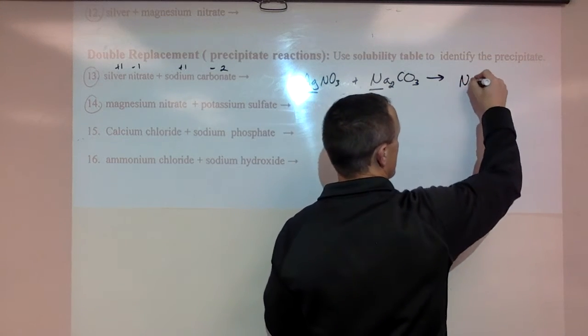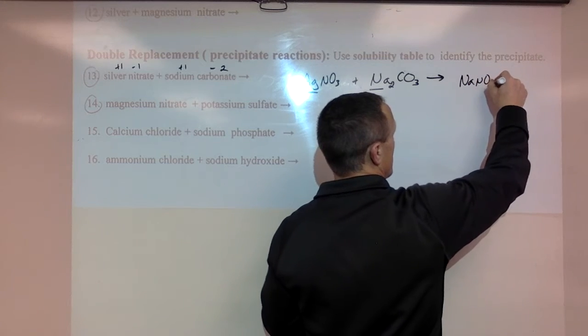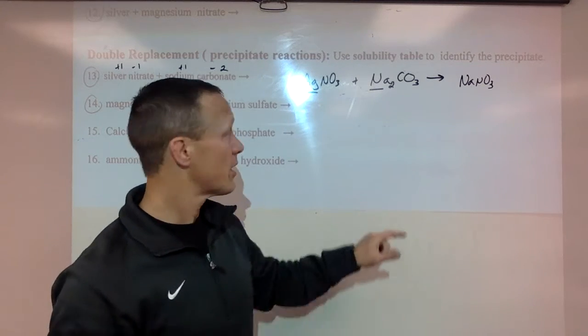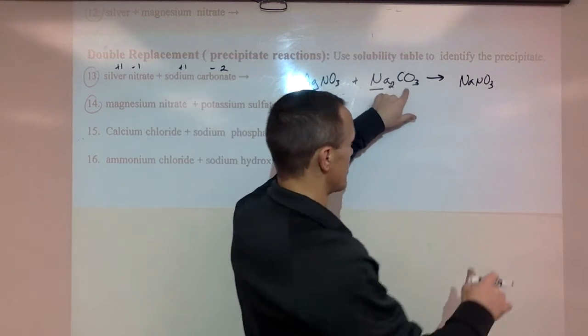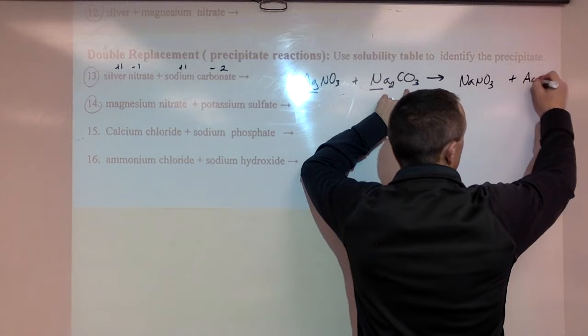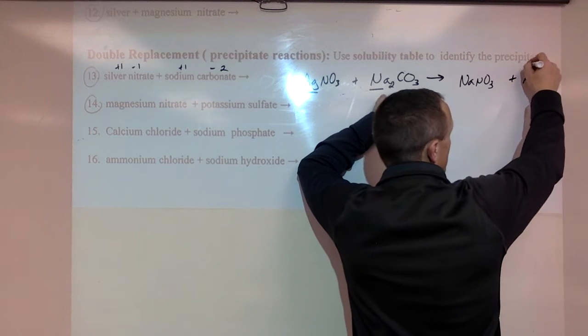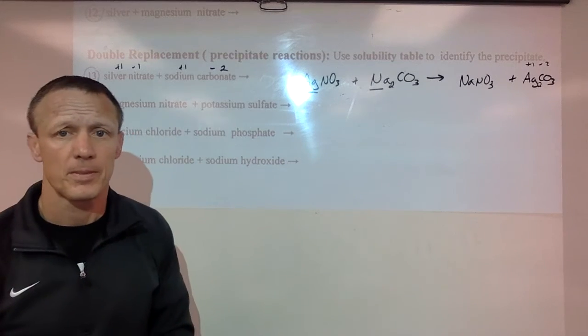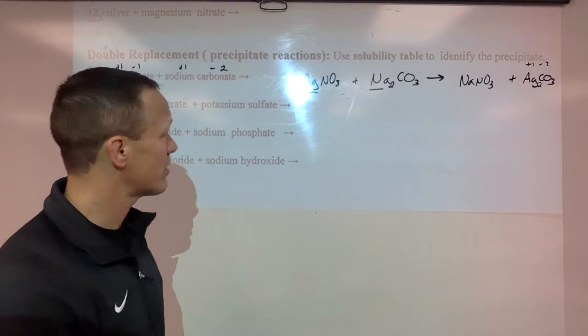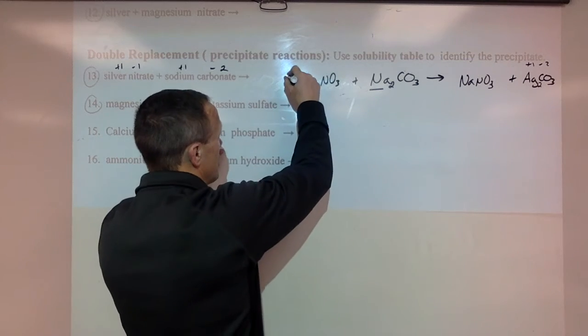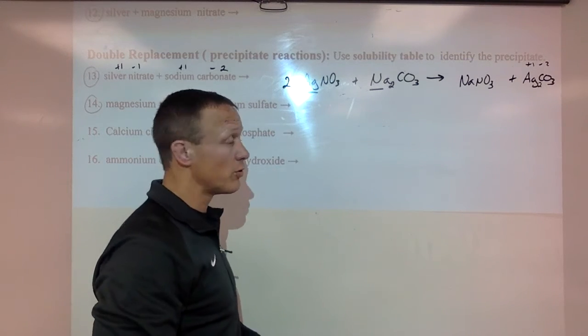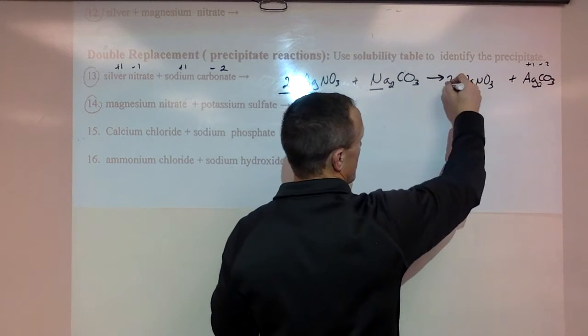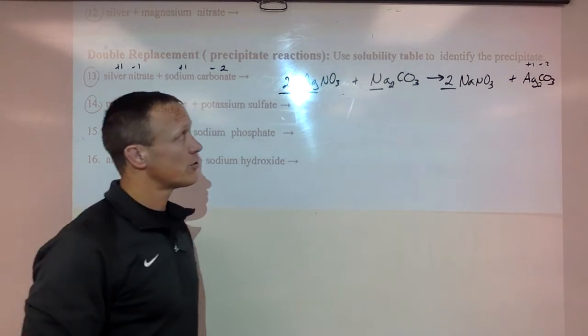So Na with NO3. You do have to look up your charges again but it's a plus one and a minus one so we're good. And then the Ag goes with the CO3. Plus one minus two so we need a little two here with our Ag. Now we can go through and balance it. We need to put a two in front of that Ag right there. And a two in front of this to get our Na's to two.